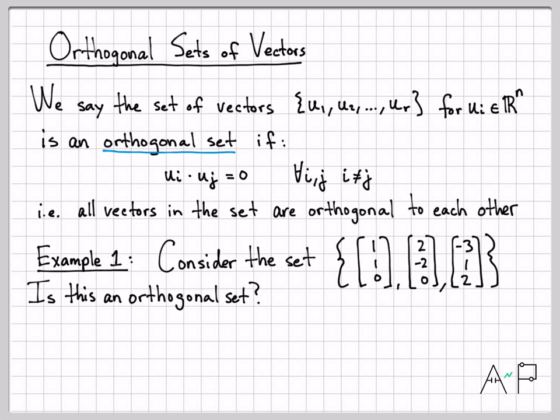So one easy way to do that based on this definition is just start computing the dot products between each vector in the set. Let's check the first pair. Let's do u1·u2. I'm going to multiply these across for my dot product computation. I'm going to get 1 times 2 plus 1 times -2 plus 0 times 0. And that equals 2 - 2 + 0, which is indeed 0. So I've passed the first check. These two vectors are orthogonal to each other.